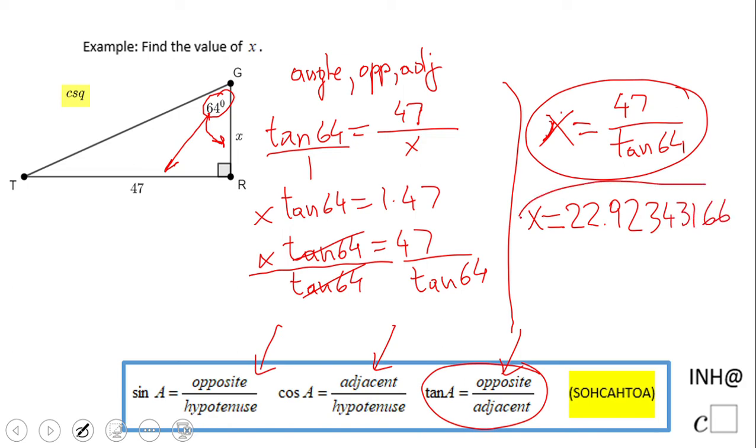Look to your problem and see how you need to approximate your x. And if you look to the problem, I guess it makes sense. This is x, 22. This is 47, less than 47. Yeah, because if you look to this angle, this is less than 64.